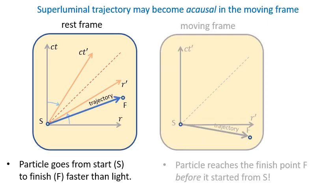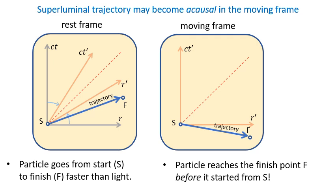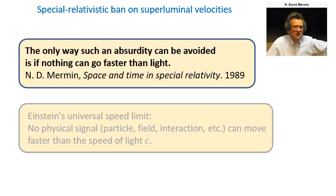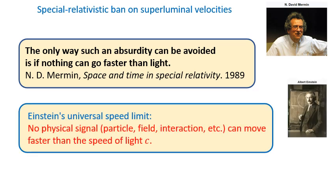However, if the rest frame motion was superluminal, then there exists a moving frame where the particle reaches its destination before it was emitted. This is a scandalous violation of the principle of causality, which says that the cause should happen earlier than the effect for all observers. The only way to fix this absurdity in special relativity is to demand that nothing can go faster than the speed of light. Thus we arrive at Einstein's universal speed limit.